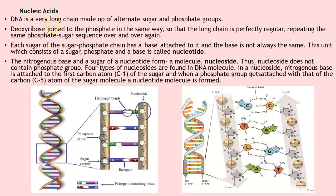DNA is a very long chain made up of alternate sugar and phosphate groups. Deoxyribose is joined by phosphate such that the long chain is perfectly regular, repeating the same phosphate-sugar sequence over and over again. Each sugar of the sugar-phosphate chain has a base attached to it, and the base is not always the same.